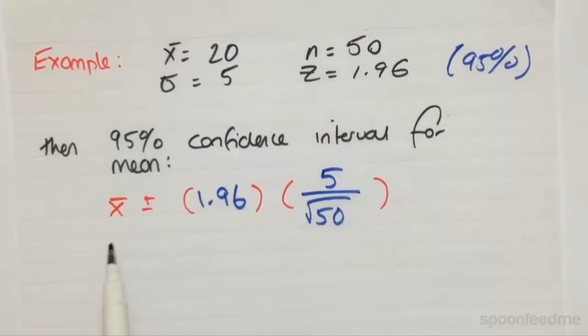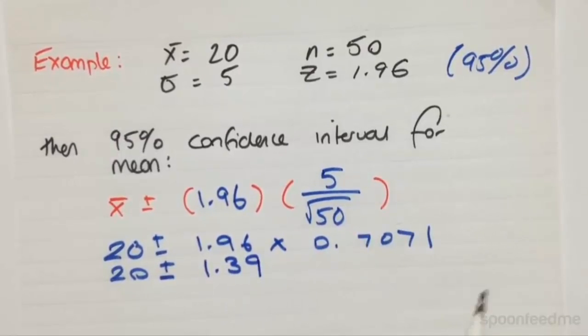So then if we substitute in our sample mean, 20 plus or minus 1.96. And if you calculate that, it's 0.7071. So it's going to be 20 plus or minus, to two decimal places, 1.39.